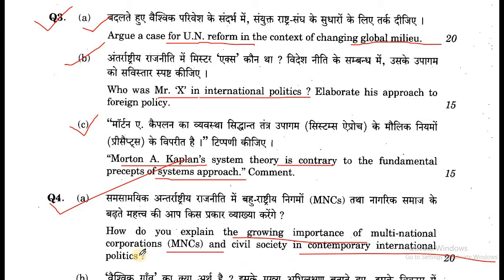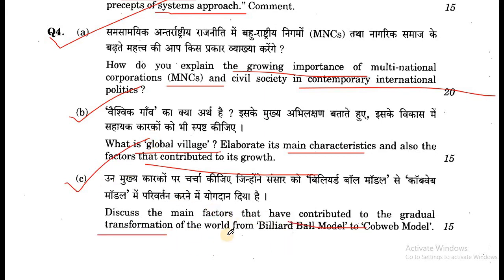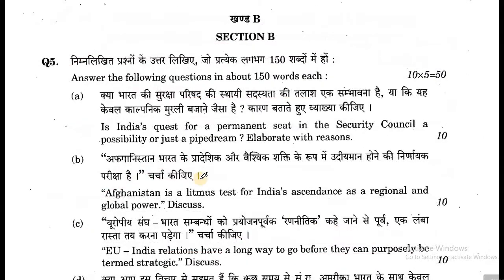Question 4: (a) How do you explain the growing importance of multinational corporations (MNCs) and civil society in contemporary international politics? (b) What is the global village? Elaborate its main characteristics and also the factors that contributed to its growth. (c) Discuss the main factors that have contributed to the gradual transformation of the world from the billiard ball model to the cobweb model.